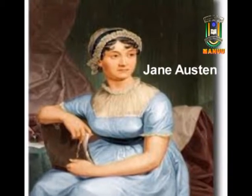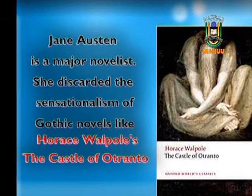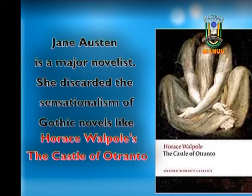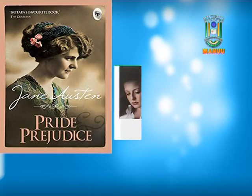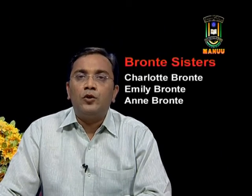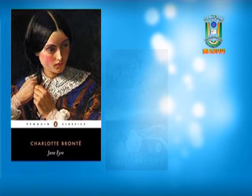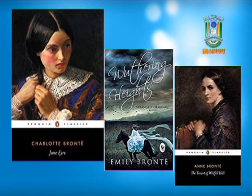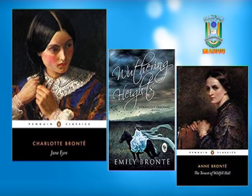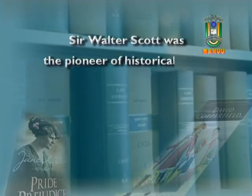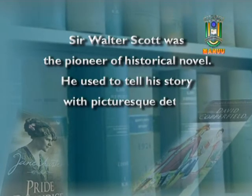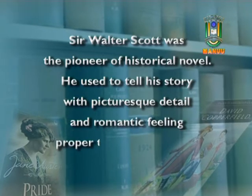In the 19th century, Jane Austen is a major novelist. She discarded the sensationalism of Gothic novels like Horace Walpole's The Castle of Otranto, and paved the way for a detailed study of English country life in her novels like Pride and Prejudice, Emma, and Sense and Sensibility. Some 30 years after Jane Austen, the Brontë sisters used the novel of terror for depiction of human passion. Charlotte Brontë's Jane Eyre, Emily Brontë's Wuthering Heights, and Anne Brontë's The Tenant of Wildfell Hall are examples. Sir Walter Scott was the pioneer of the historical novel, telling his stories with picturesque detail and romantic feeling proper to the bygone age.